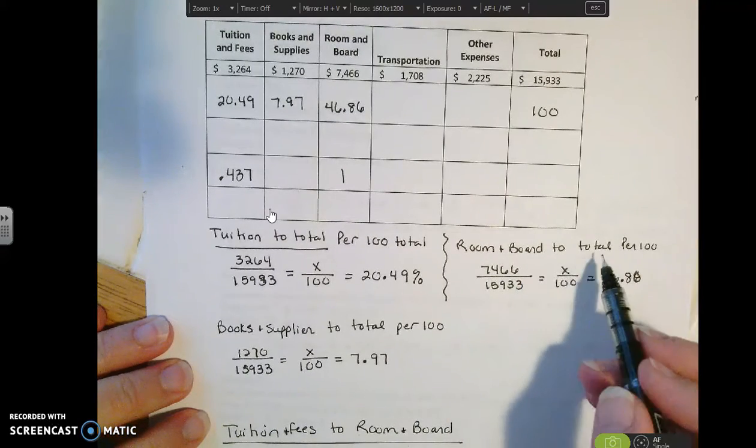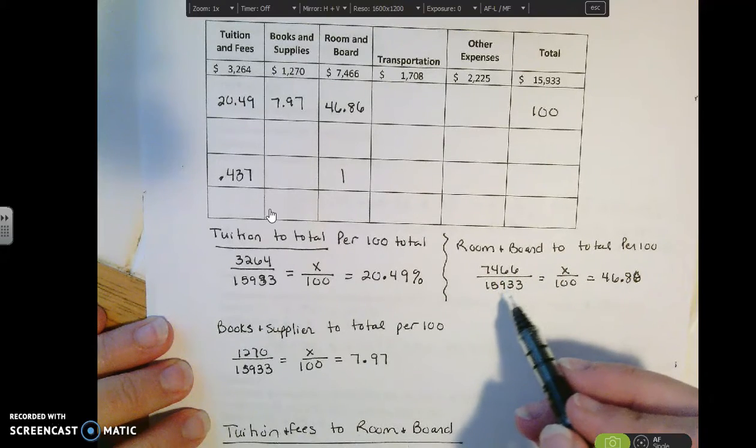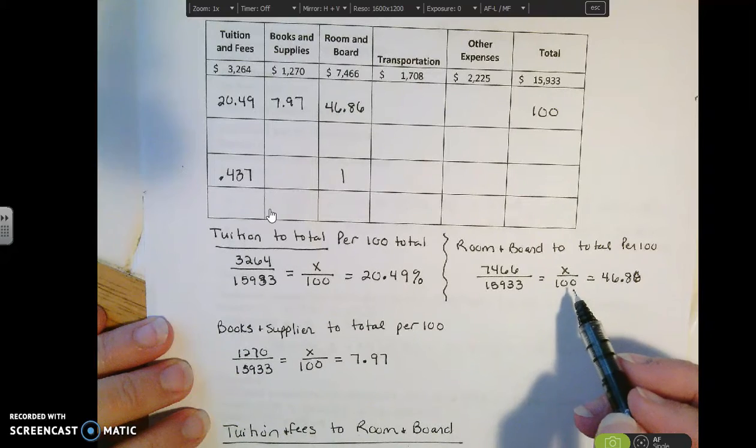Room and board to the total cost. So again, room and board is $7,466 and total cost is $15,933. Again, we're going to scale it to 100.